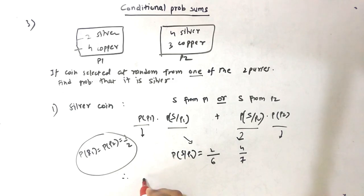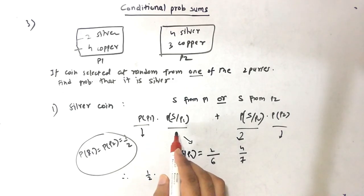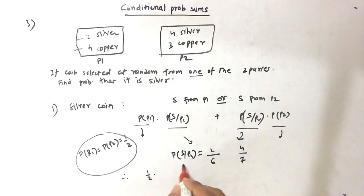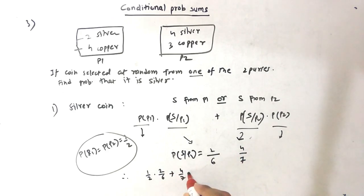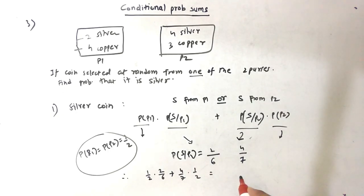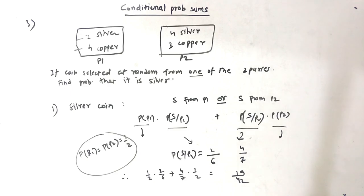So the final answer is: 1/2 × 2/6 + 1/2 × 4/7 = 19/42.